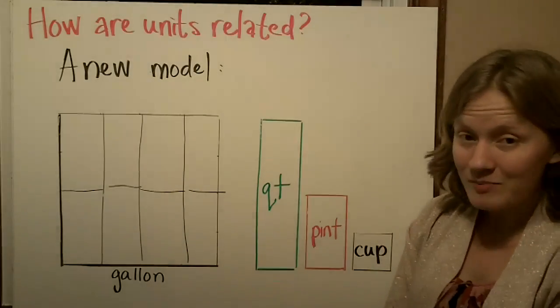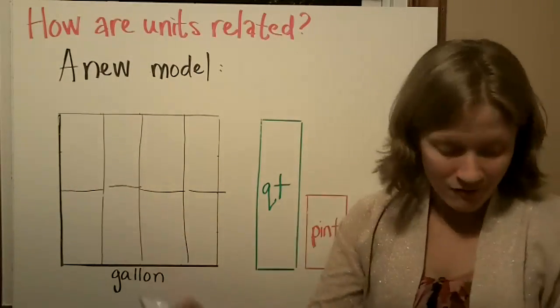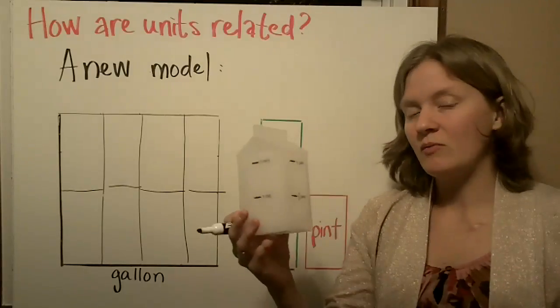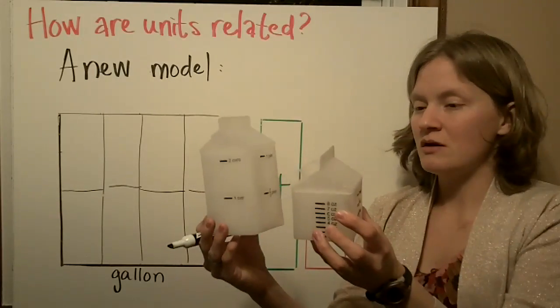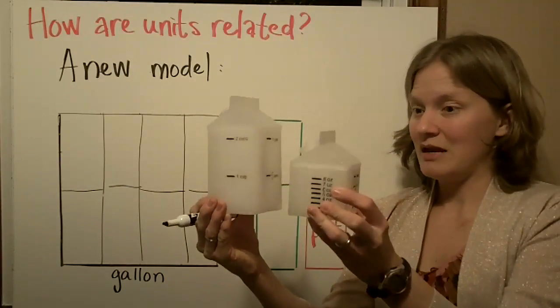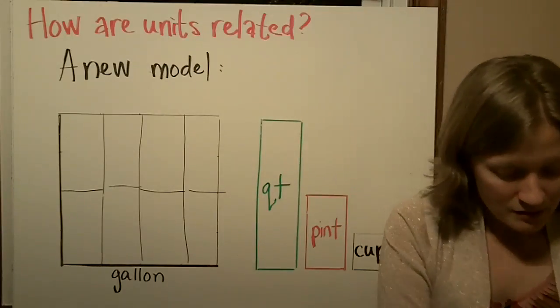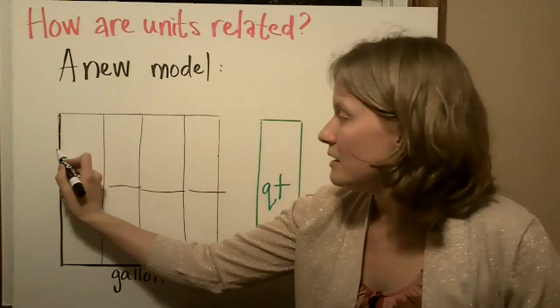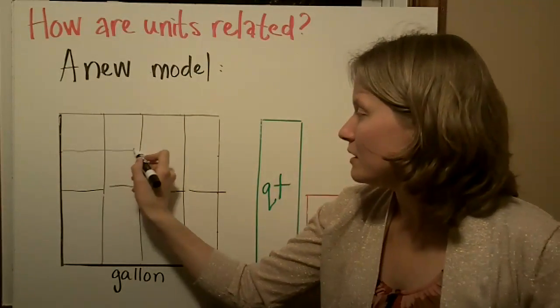The pint is represented by the rectangle of this size. To show cups, split each pint in half, which makes sense when you look at our containers. I'm taking the pint and splitting it in half to get the cup.